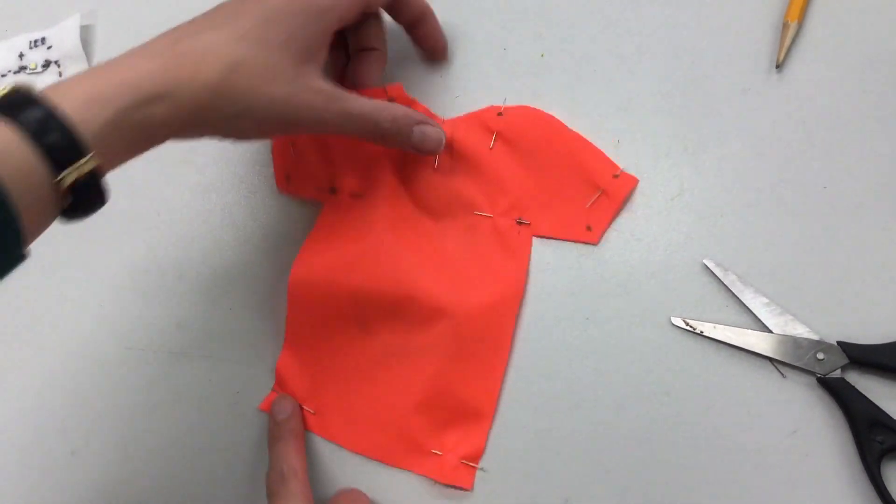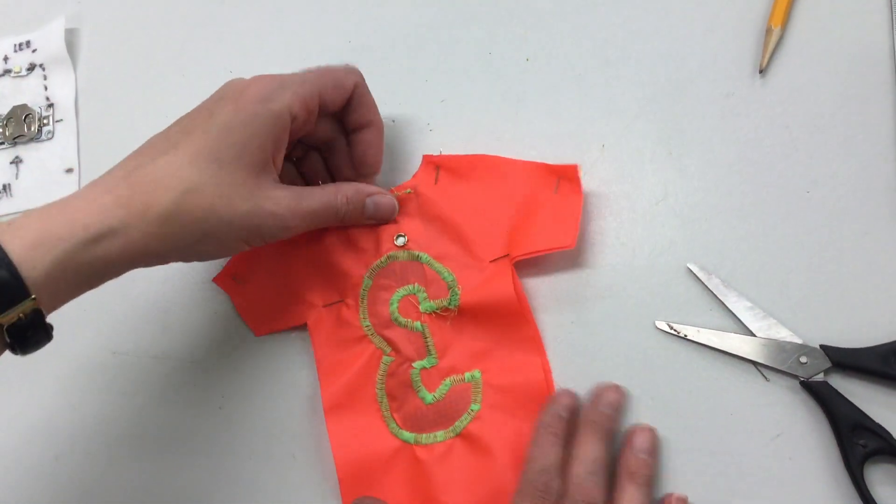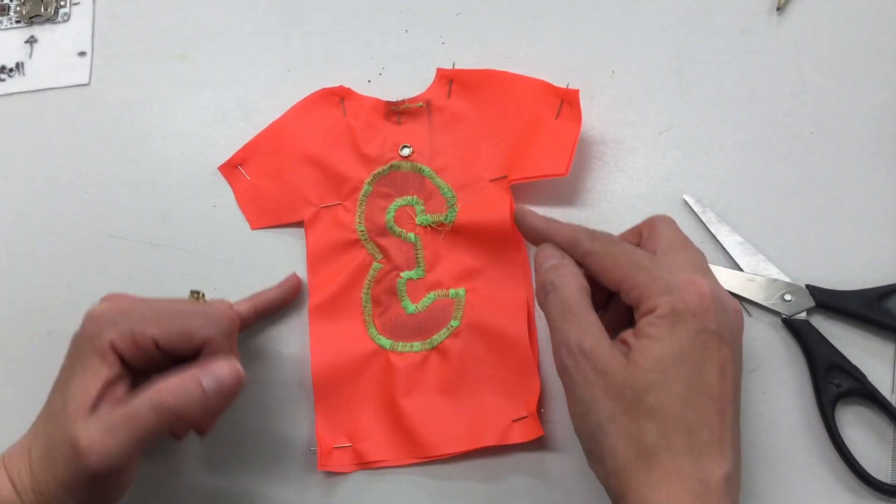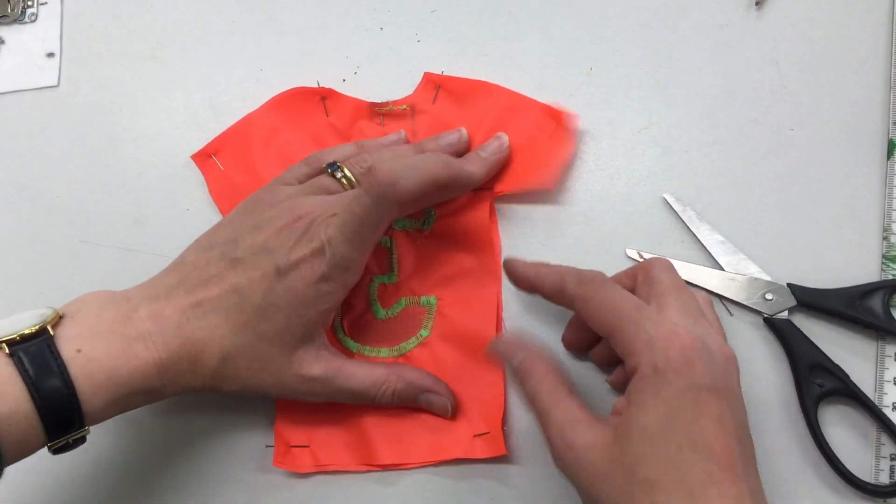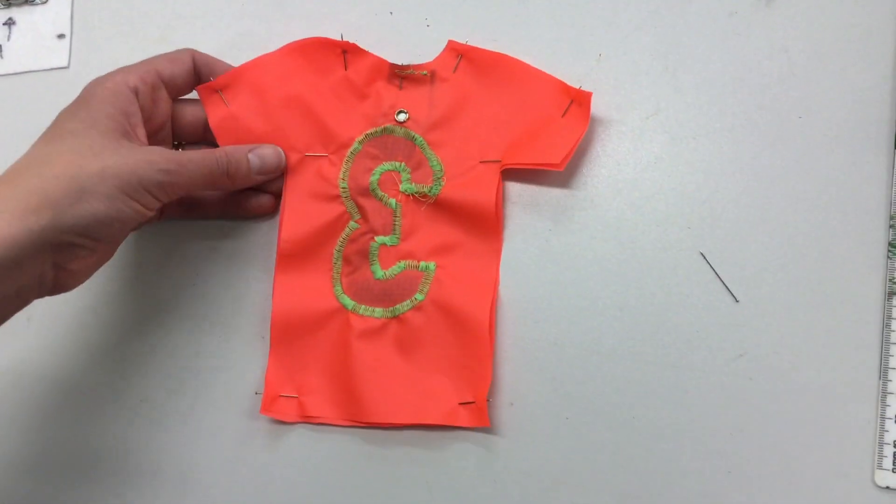Then you're finished. Check that the back is matching up. If it's slightly bigger, you can trim your edges down with a pair of fabric shears.